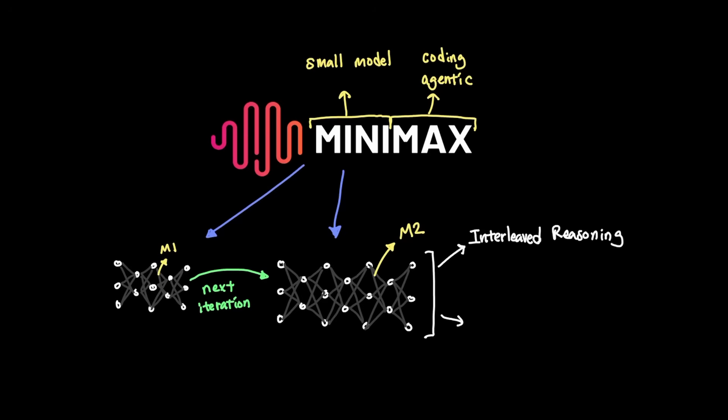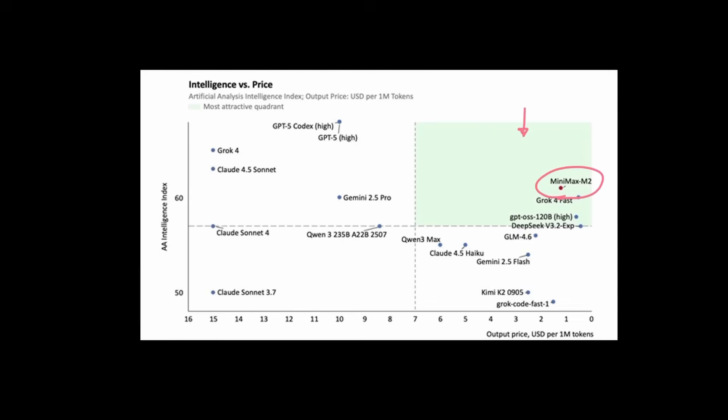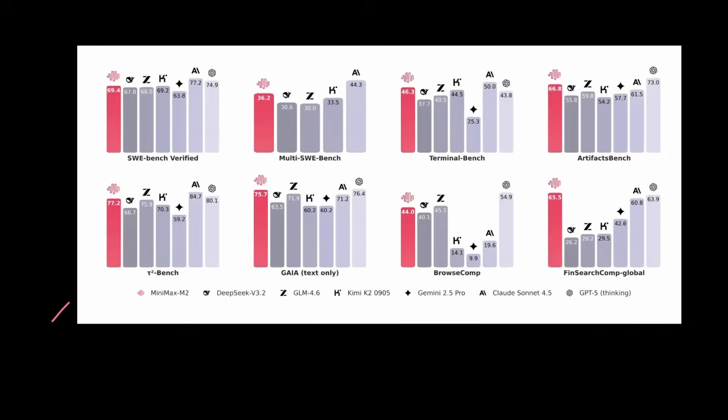Interleaved reasoning and what they call SysPo. And these two factors help score the M2 model in this quadrant that shows the intelligence in the y-axis and price on the x-axis, basically showing that it's the best bang for the buck when it comes to intelligence and price. Also, M2 scored high on the toe-squared benchmark which demonstrates its strong agentic abilities.